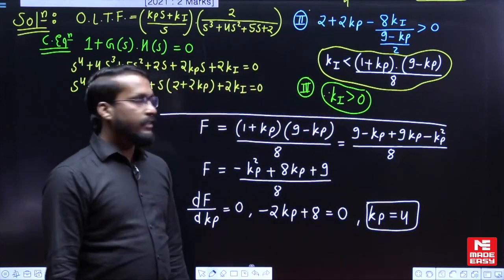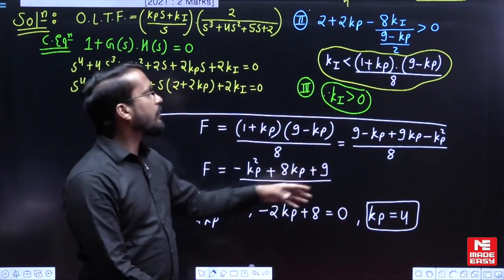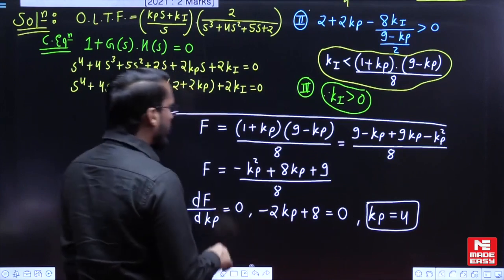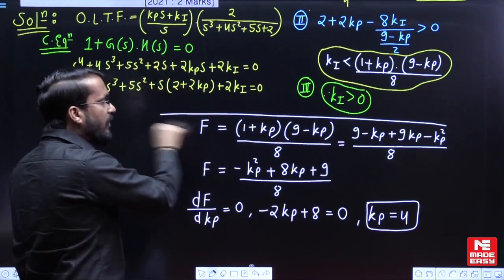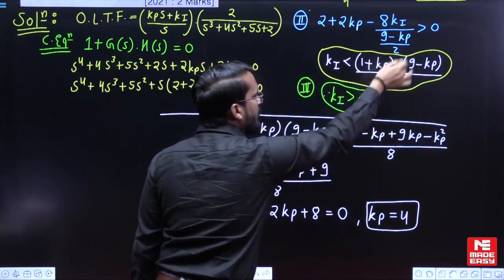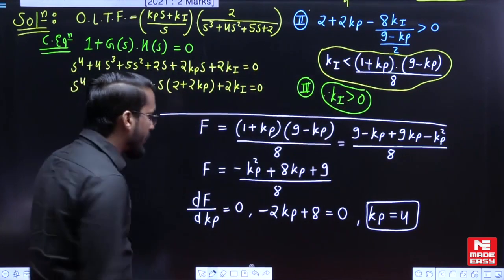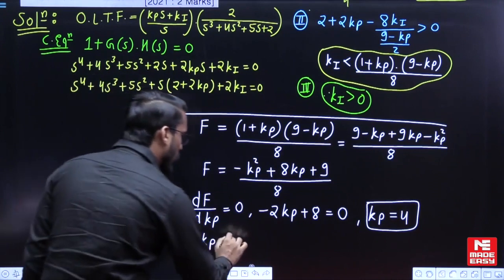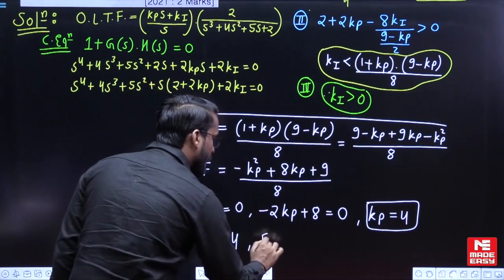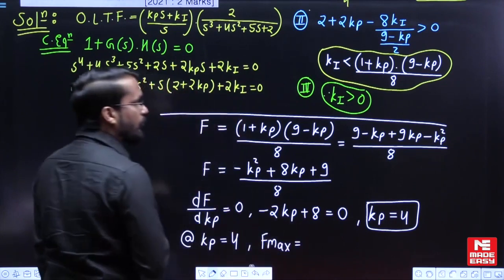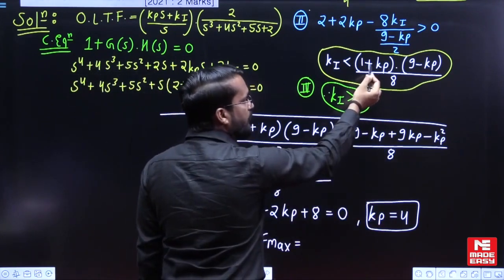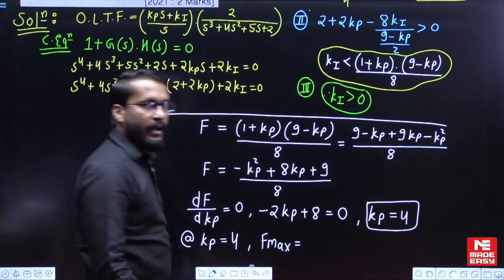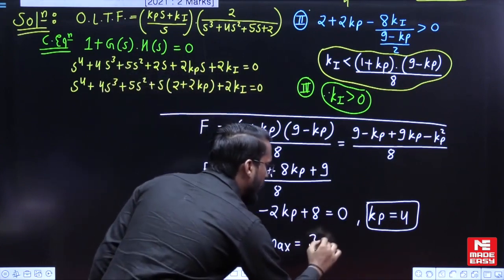KP = 4 is acceptable because it satisfies the condition KP < 9. Now I want to find the maximum value of the function f, because that maximum value decides the maximum possible KI. At KP = 4: f_max = (1 + 4)(9 − 4) / 8 = 5 × 5 / 8 = 25 / 8 = 3.125.